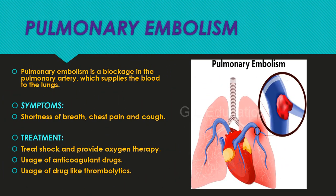Pulmonary embolism is a blockage in the pulmonary artery, which supplies blood to the lungs. Symptoms include shortness of breath, chest pain, and cough. Treatment includes treating shock, providing oxygen therapy, usage of anticoagulant drugs, and usage of drugs like thrombolytics.